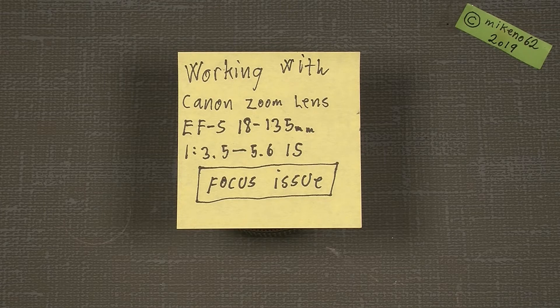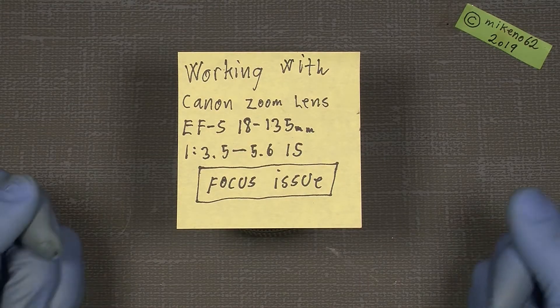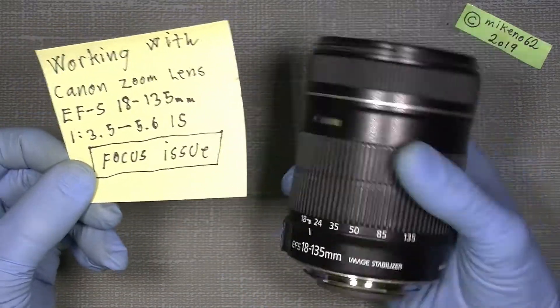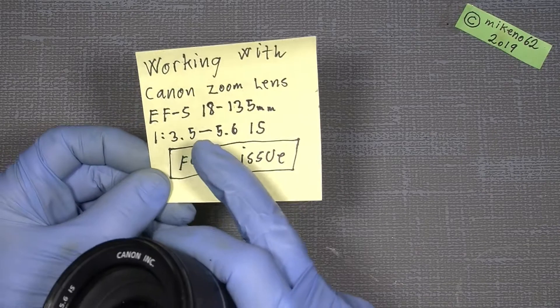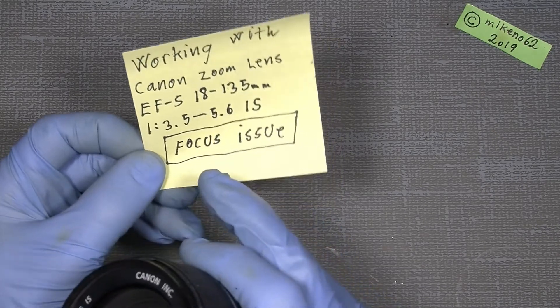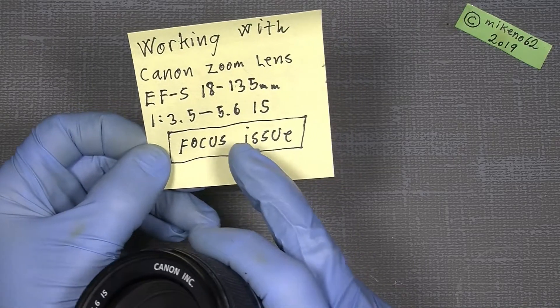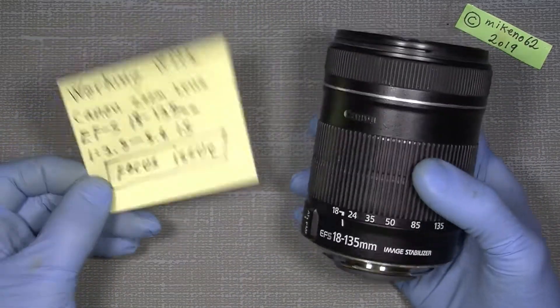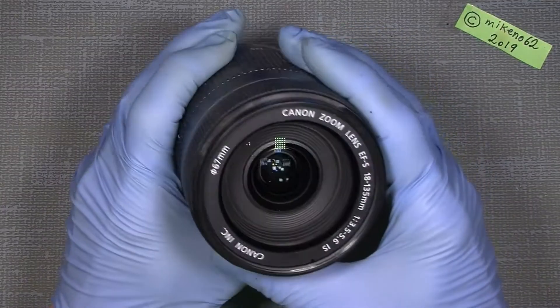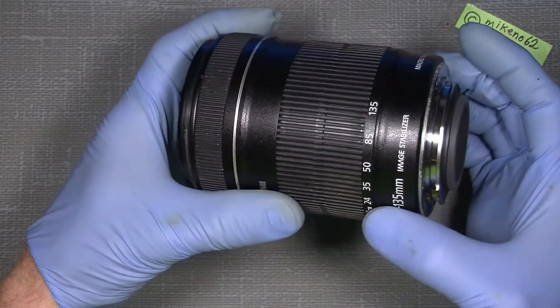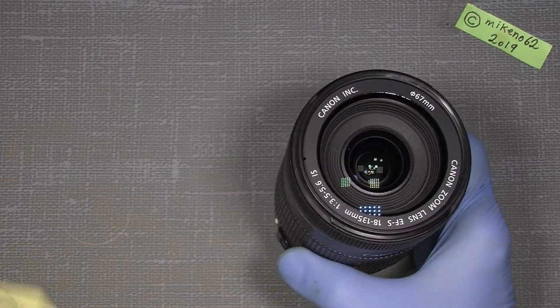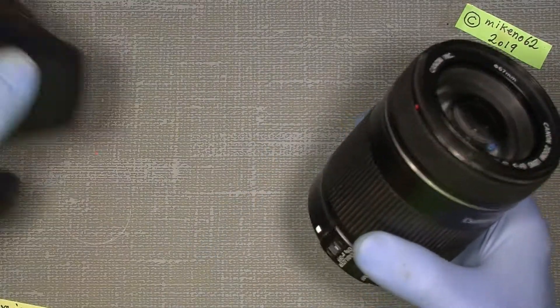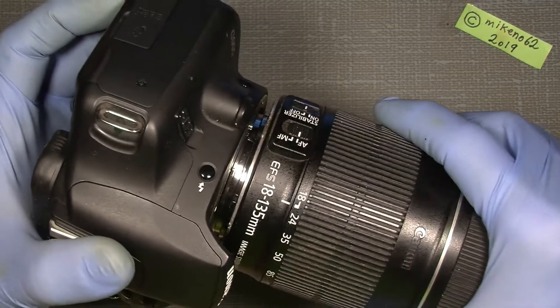Hello everybody and welcome to another tutorial in camera and lens repair. This time I got a Canon zoom lens EFS 18-135mm, 3.5-5.6mm with IS image stabilizing and it actually has some focus issue. So I got the lens for free and it could be interesting to see what I can do about it and maybe get a lens for my Canon 500D.